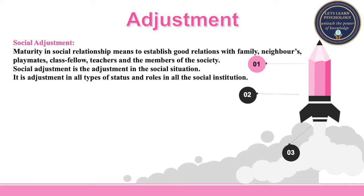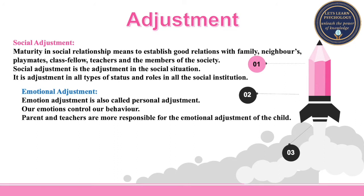Let's understand all these areas of adjustment. First, social adjustment — this relates to establishing good relations with family, neighbors, playmates, classmates, teachers, and members of society. This leads to adjustment in any social situation. For example, a child may be a sister, a daughter, a friend, a student, and if she is able to have good adjustment in all these roles, that would be social adjustment.